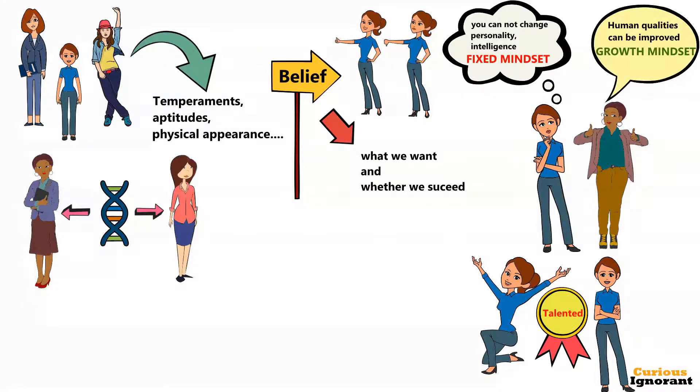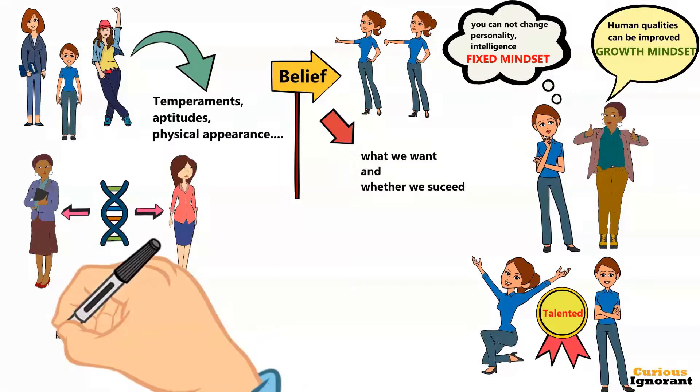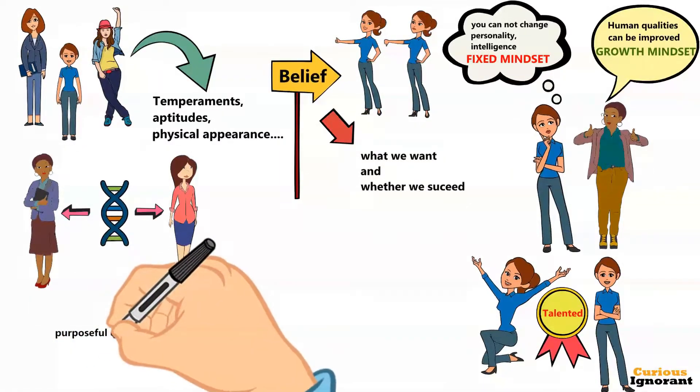Robert Sternberg, the present-day guru of intelligence, writes that the significant factor in whether people achieve expertise is not some fixed prior ability, but purposeful engagement.